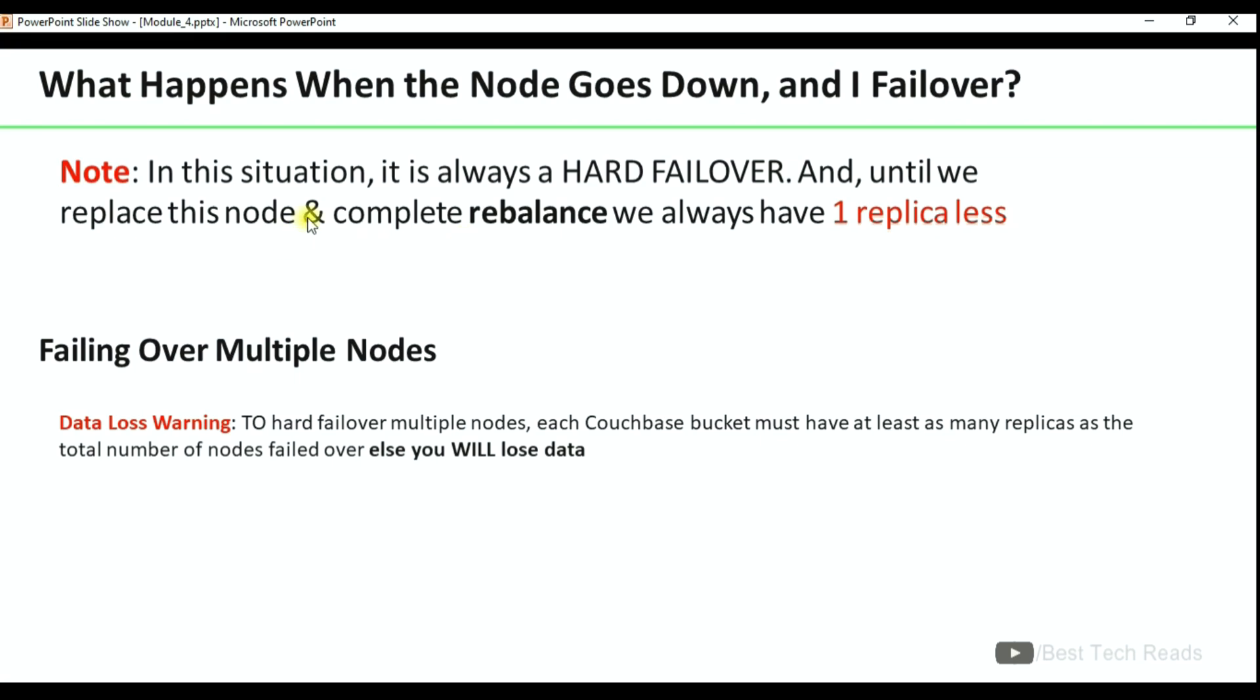So once we replace this node and do rebalance, then the replicas will be adjusted as per the replica setting in the bucket. Failing over multiple nodes: when you are failing over multiple nodes, you have to make sure you have more number of replicas than the number of nodes you are trying to failover.